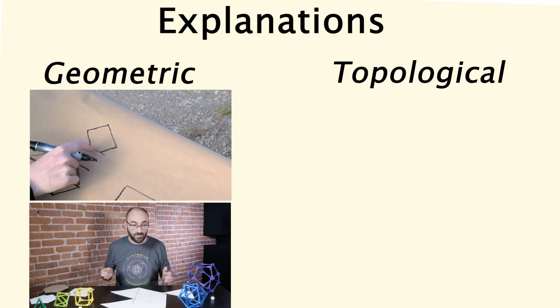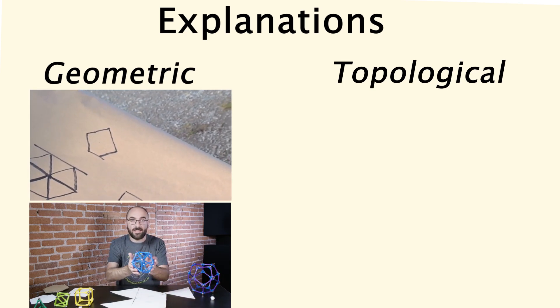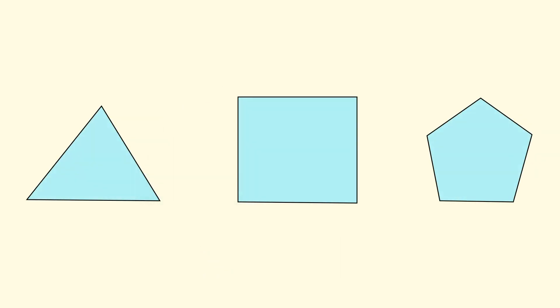Now for the geometric explanation note that we can construct any of these 3D shapes by taking two-dimensional polygons and folding them up along certain edges. We're also only concerned with regular polygons that have identical sides and angles, so we might as well start with equilateral triangles.